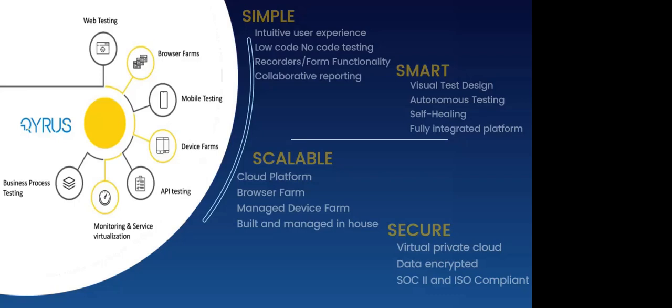Our final and most important pillar is security. As tech develops, security is becoming increasingly important. The entire platform is sitting on a virtual private cloud. Kairos also enables data encryption, both in transit and at rest, and is SOC 2 Type 2 as well as ISO compliant — both of which are industry standard certifications. To Kairos, security is of the utmost importance.